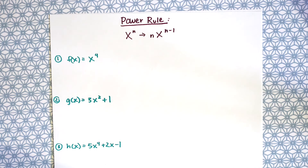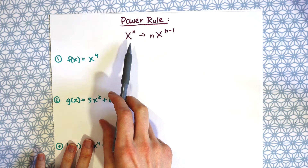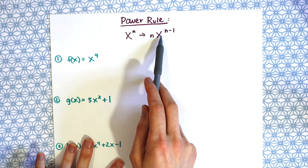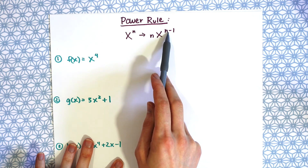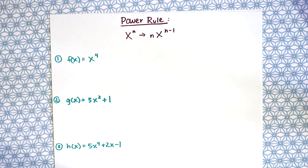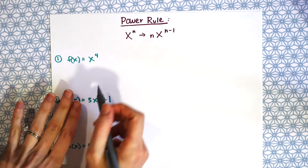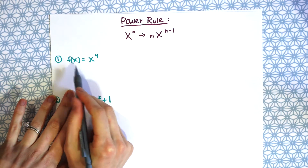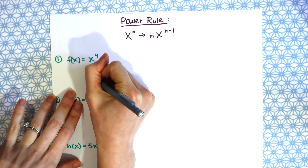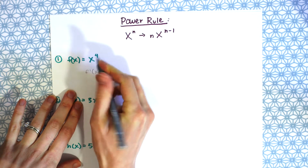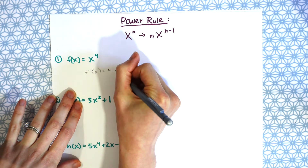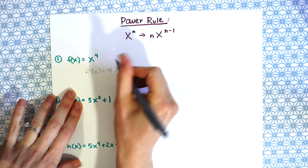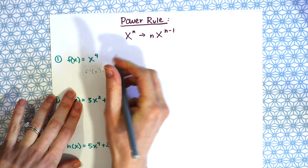First let's start with the power rule — this is the easiest rule. This happens when we have x raised to a power: we bring down that power, multiply it by the variable, and then subtract 1 from that original exponent. For example, f of x equals x to the fourth. Applying the power rule, f prime of x equals 4 times x to the power of 4 minus 1, which is 4x cubed.